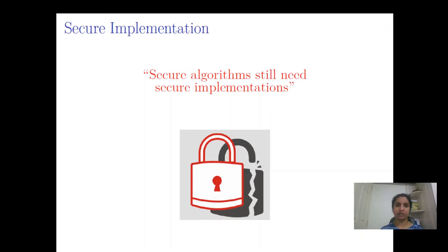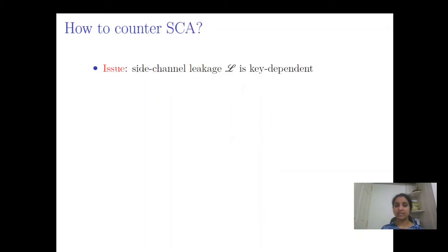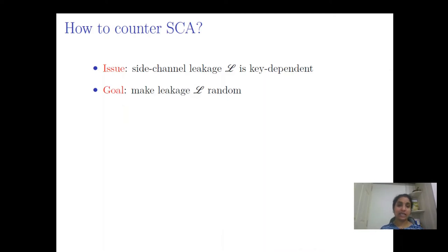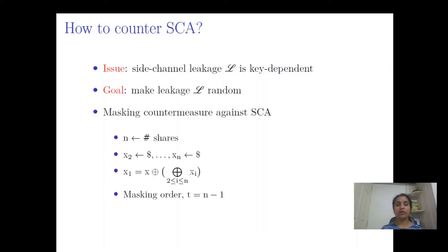What do we mean by secure implementation? Since the leakage from the device is correlated to the secret, the adversary can mount a side channel attack. If we can make the leakage key-independent by inducing randomness into the computation, this can possibly counter side channel attacks. This way of inducing randomness into the computation is known as masking. As part of the masking scheme, the secret will be divided into n shares. We will use additive secret sharing.